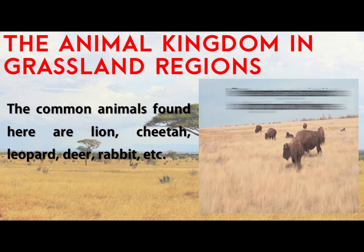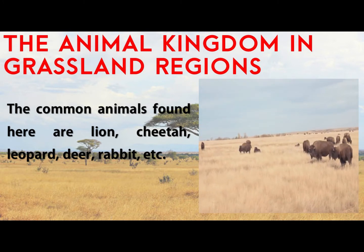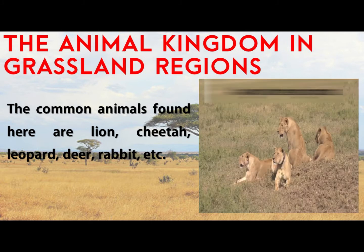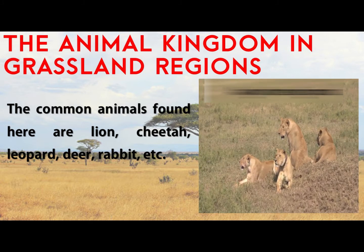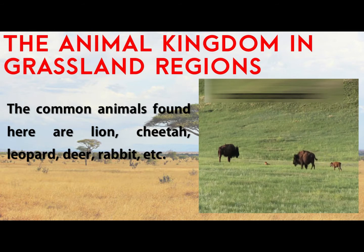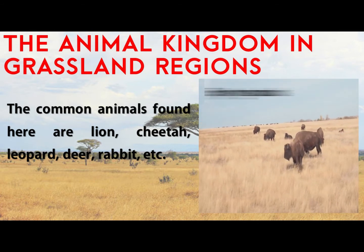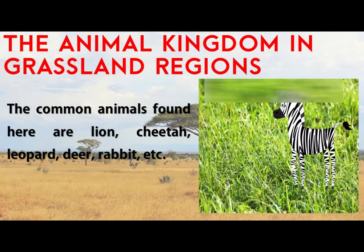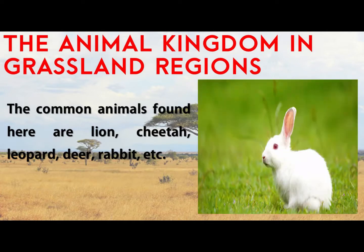Now let's see the animals in the grassland regions. The grasslands have less vegetation cover, due to which they have fewer animals. The common animals found here are lion, cheetah, leopard, deer, and rabbit.